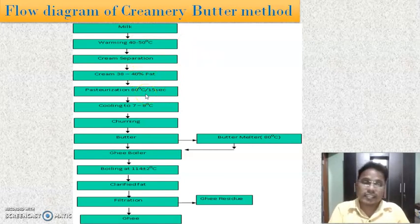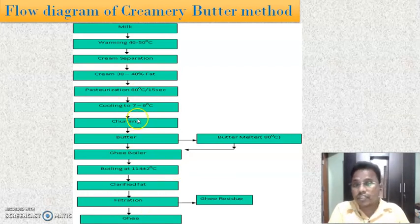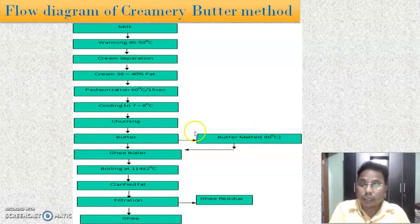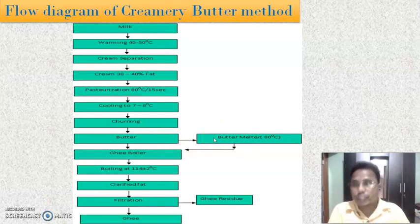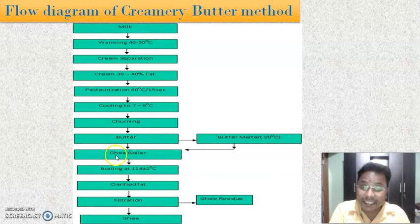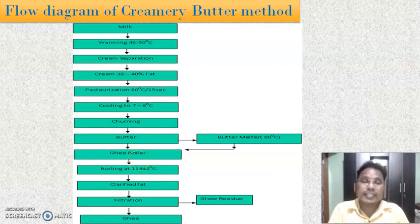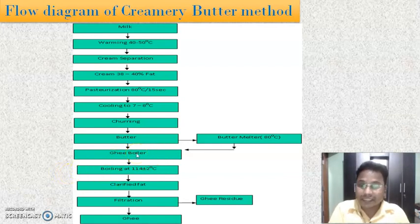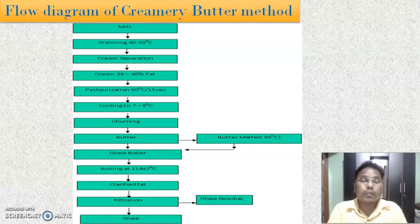This cream is pasteurized to 80 degrees Celsius to kill microorganisms. Then the cream is cooled and allowed for churning. When the churning process is completed, we get butter, and that butter is taken into a separate butter melter. The butter is generally cut into small size pieces so it helps to melt easily. When the butter is melted, it is pumped to a ghee boiler, where the butter is boiled. The ghee boiler is a stainless steel vessel where the butter is boiled. When the butter starts to boil, it forms scum over the surface, which is removed with the help of a perforated ladle.